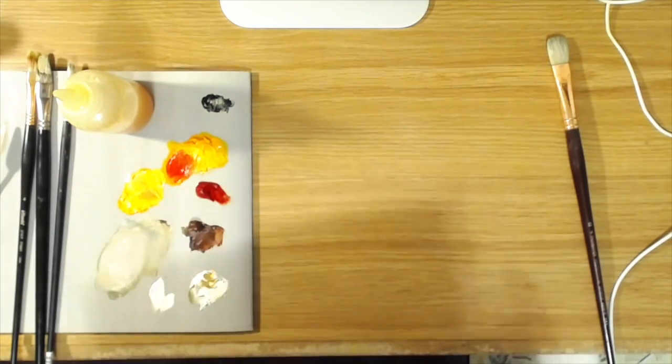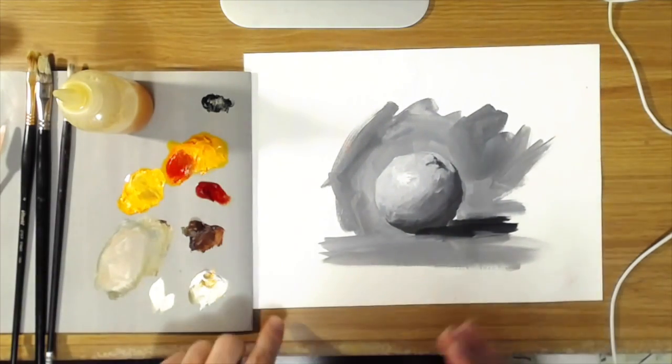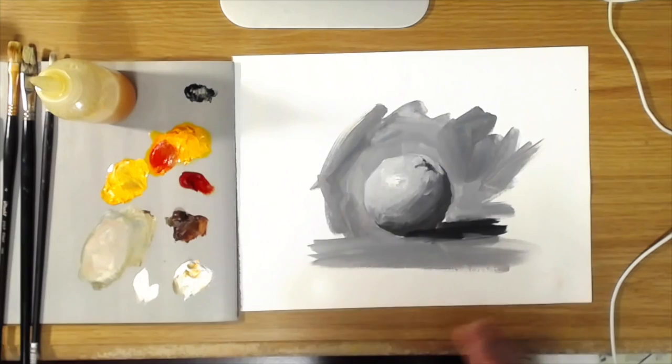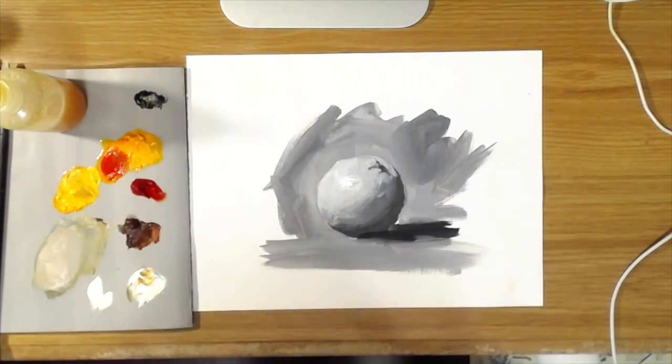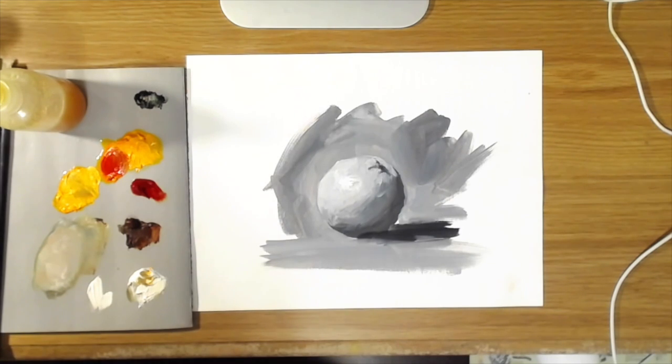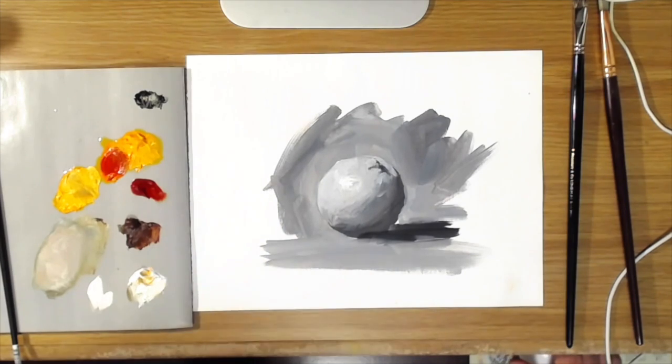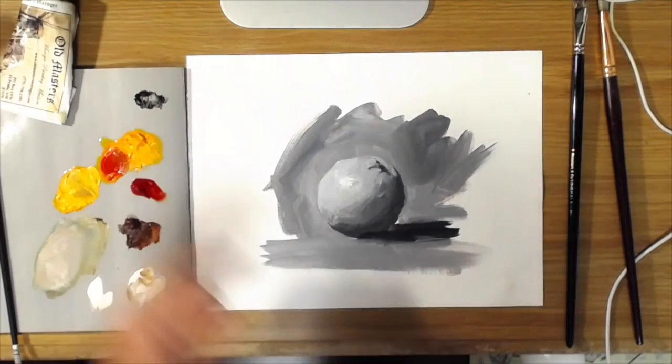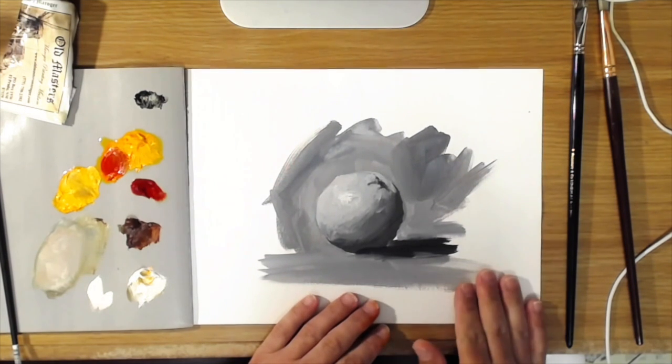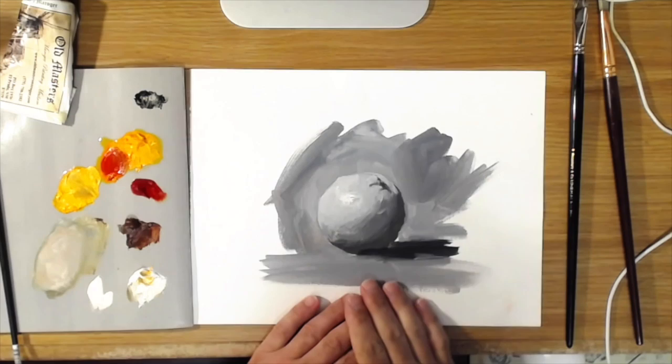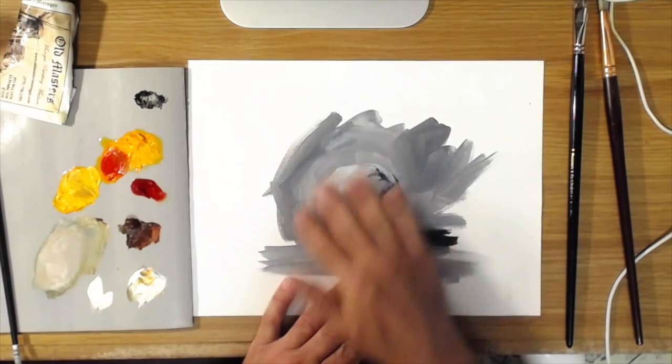This is the method that goes back to the Renaissance and some of the medieval paintings. That's where you build up layers of color with glazes over a monochromatic underpainting. So what I've done here is, earlier today, I painted this grayscale painting of an orange, and this is done in acrylic. So this is dry. I let it dry.